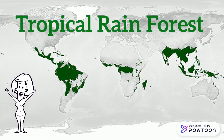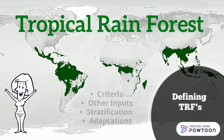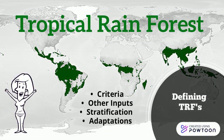Welcome! This is the first topic of the tropical rainforest model. We will define what a tropical rainforest is and its adaptations. First we will go through the criteria that define tropics, then we will give other inputs that also define the tropics, and we will go through the stratification layers and certain adaptations of each layer.